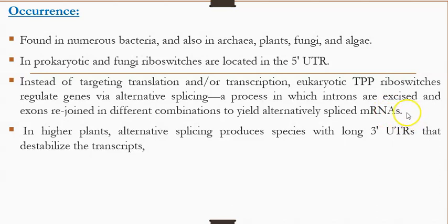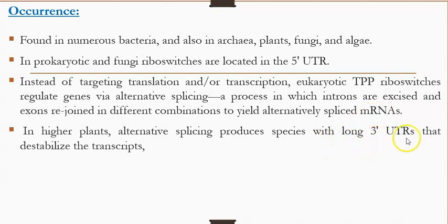Coming to higher plants, alternate splicing produces not different types of mRNA, but instead a long 3' untranslated mRNA, which makes the mRNA unstable and leads to its degradation. This degradation itself is a form of gene regulation by making the mRNA highly unstable.